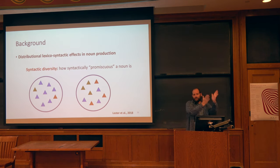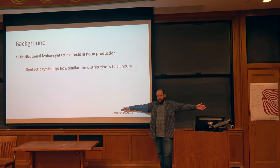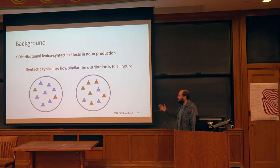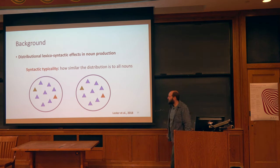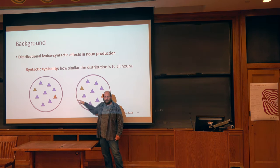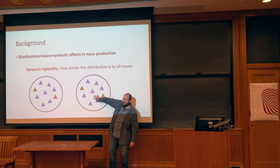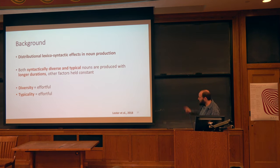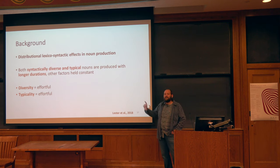In terms of syntactic typicality, what we mean is how similar a single word is to the behavior of all other words in this space. We can look at two distributions — are they similar? Not very much. But let's say we have these two: they are similar, but they're not diverse either. So you can have typical distributions that are not diverse, or vice versa — these are independent measures. What we found is that both syntactically diverse and typical nouns are produced with longer durations when other factors are held constant. If you act like other nouns, then you are longer. If you are yourself quite diverse, you are longer, and these are statistically independent effects.